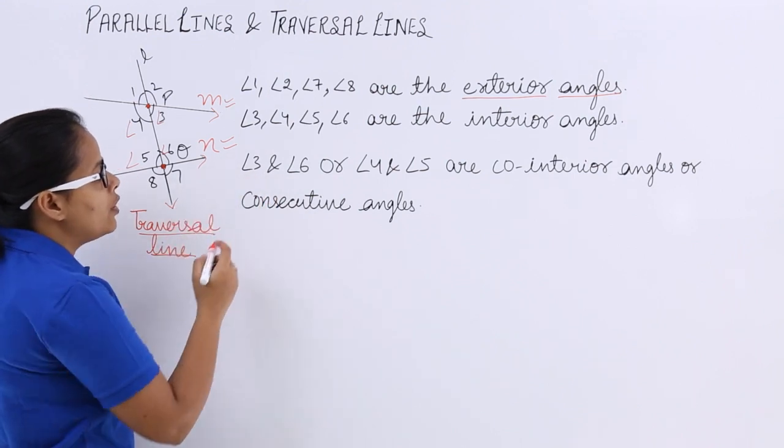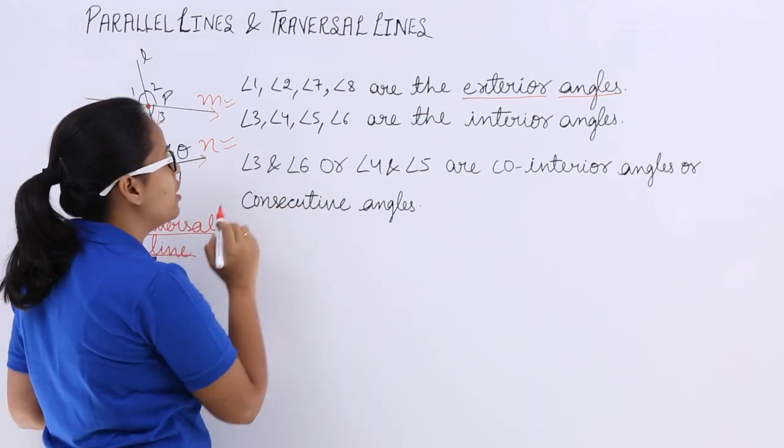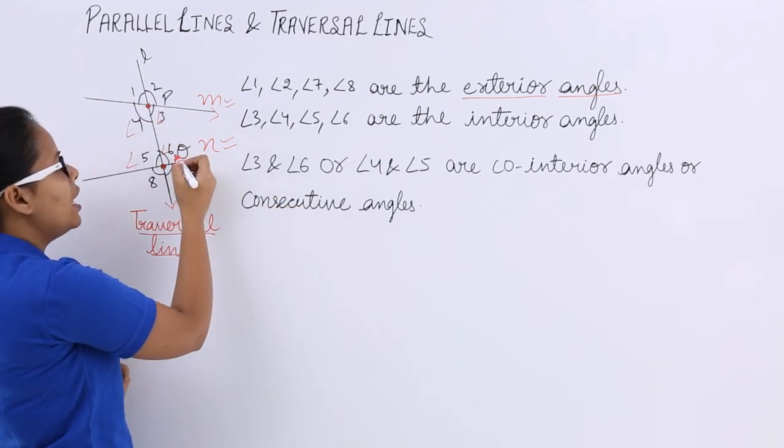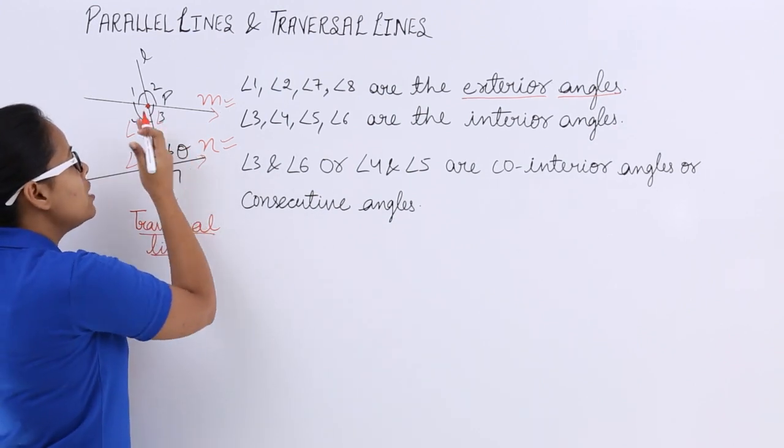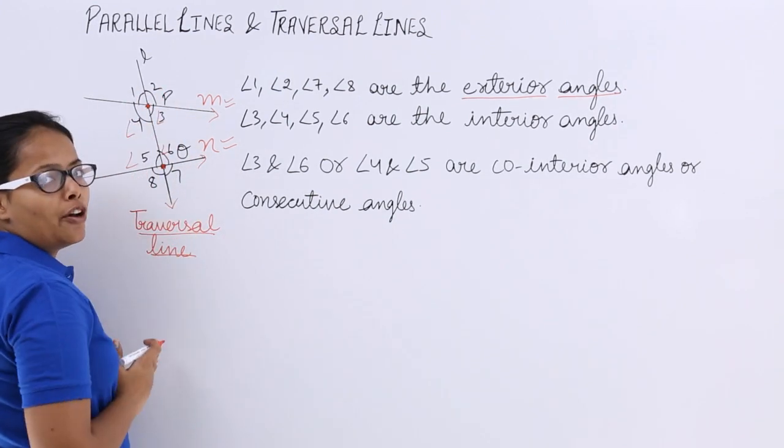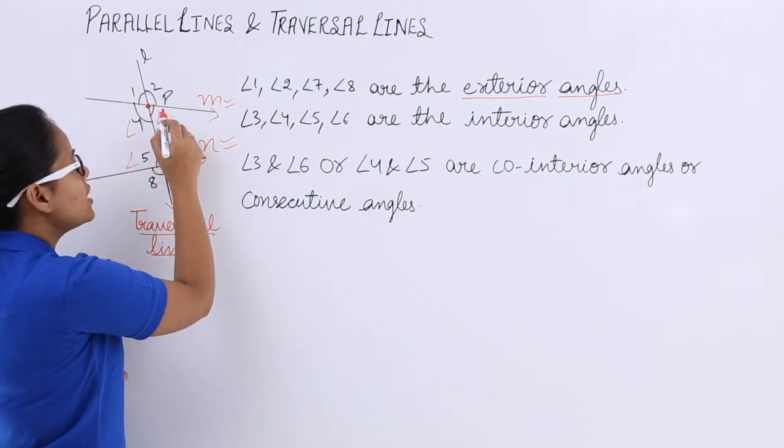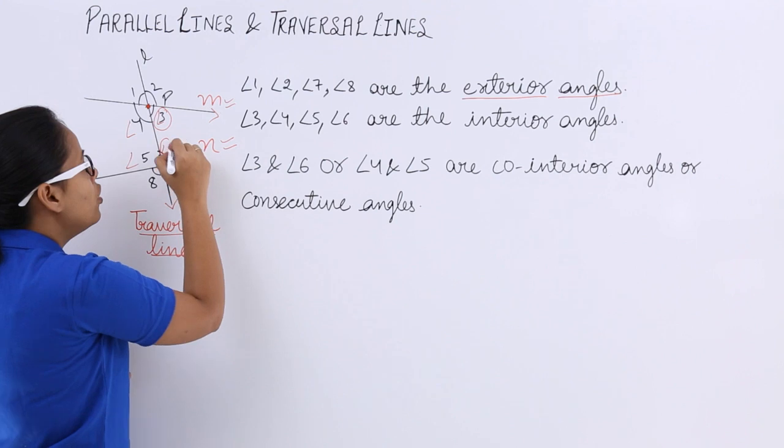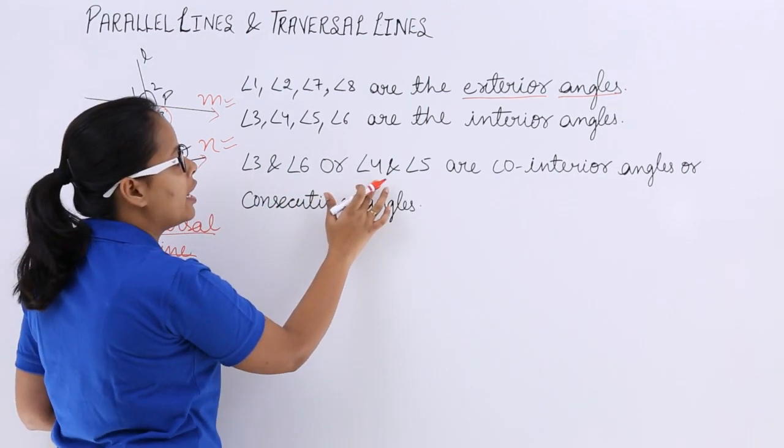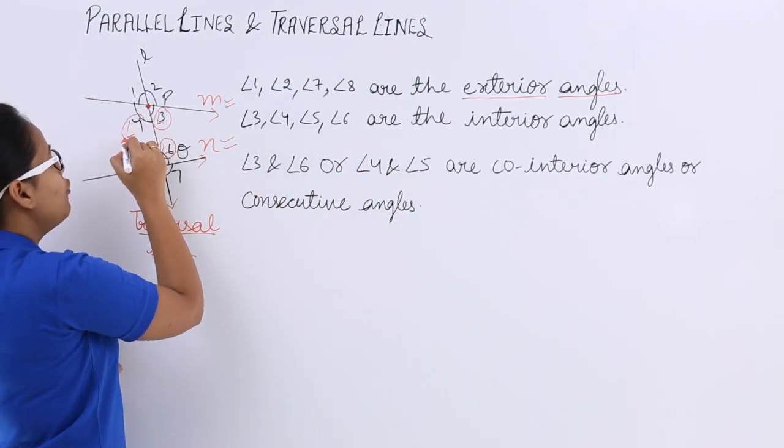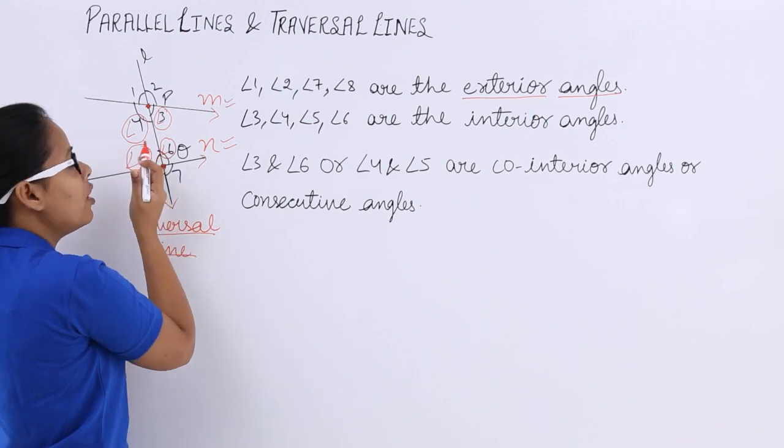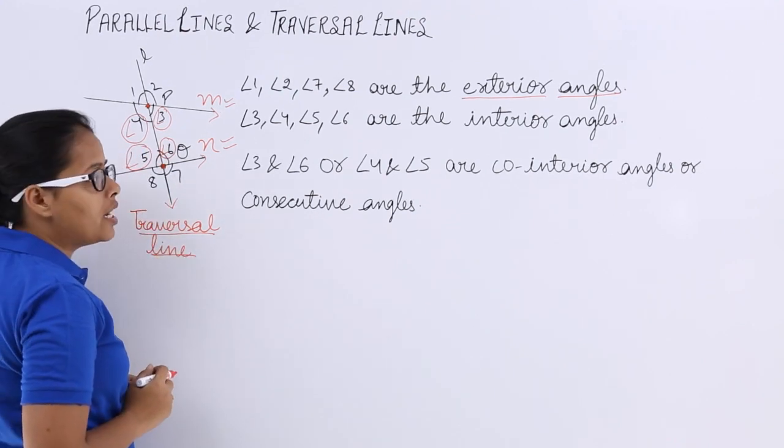Now third line, you can see here angle 3 and angle 6. These angles are lying on the same side of the transversal line. This is the transversal line here. These angles are lying on the same side of the transversal line, and angle 4, angle 5—angle 4 and angle 5 are also lying on the same side of the transversal line.